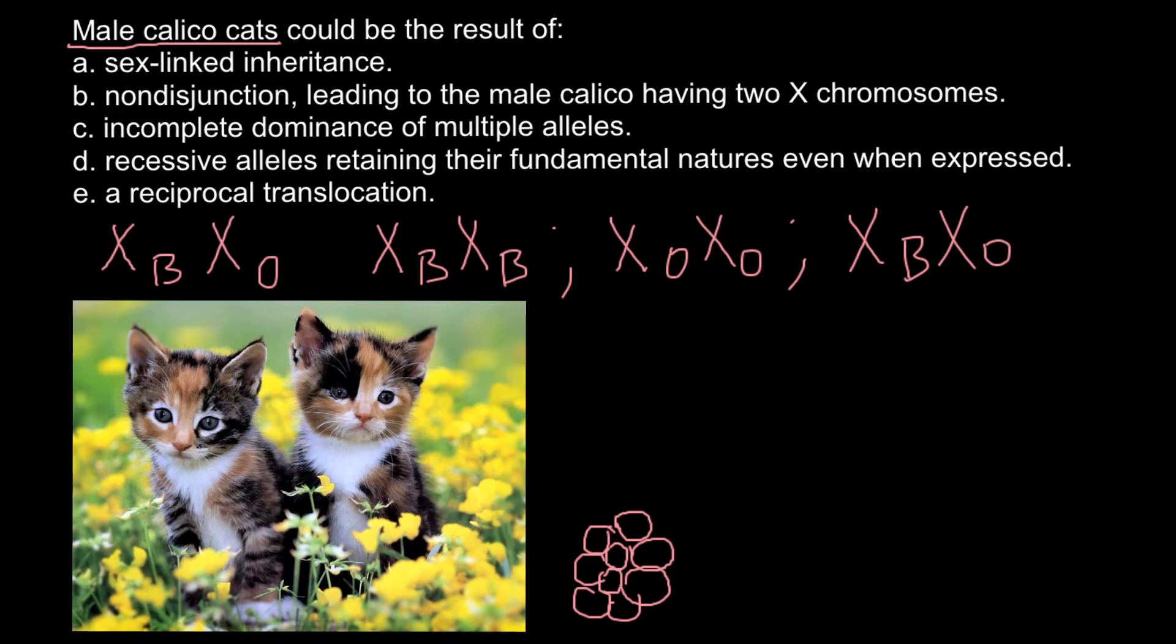So in some cells, B chromosome or chromosome with B allele would be turned off and such cell would produce orange color fur. And also due to mitosis, such cell would divide and would give rise to many other cells where this B allele would be turned off.